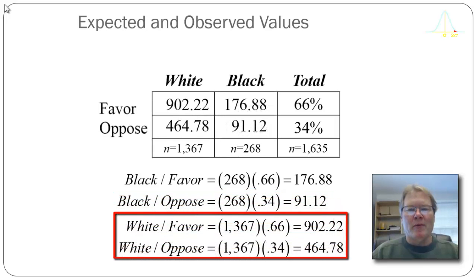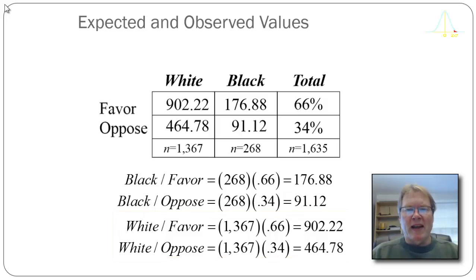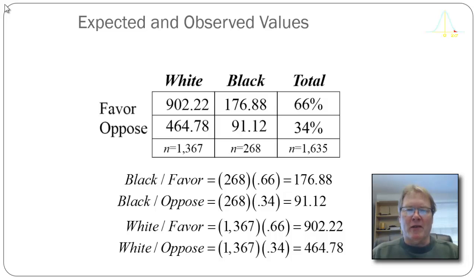I do the same thing for white respondents and create a table of expected values. 902.22 white respondents who favor capital punishment is approximately 66% of the 1,367 white respondents, and 176.88 black respondents who favor is approximately 66% of the black respondents. These are the expected values under the assumption that the null hypothesis is true — that there's no difference between black and white respondents. Proportionally, both groups represent 66% favoring and 34% opposing.